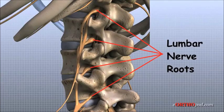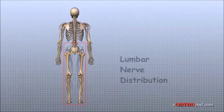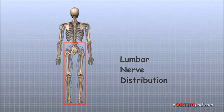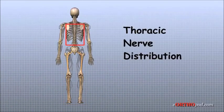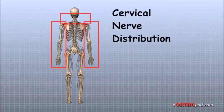The nerve roots that come out of the lumbar spine form the nerves that go to the lower limbs and pelvis. The thoracic spine nerves go to the abdomen and chest. The nerves coming out of the cervical spine go to the neck, shoulders, arms, and hands.